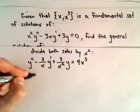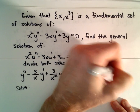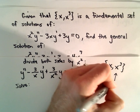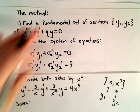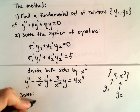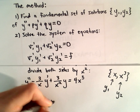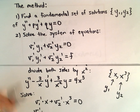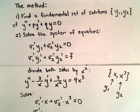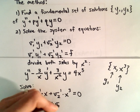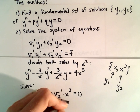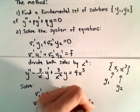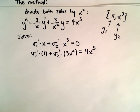Now we have to solve our system. We have y₁ = x and y₂ = x³ as our fundamental set of solutions. So the system is: v₁'·x + v₂'·x³ = 0, and v₁'·(1) + v₂'·(3x²) = 4x⁵, where we use the derivatives of y₁ and y₂ and the function f = 4x⁵ on the right side.